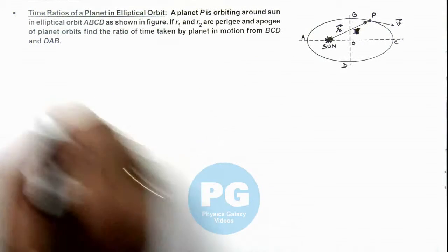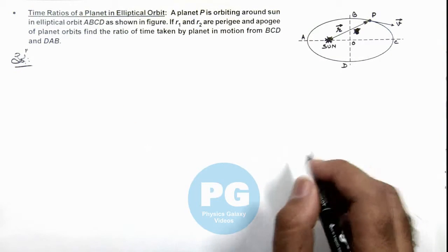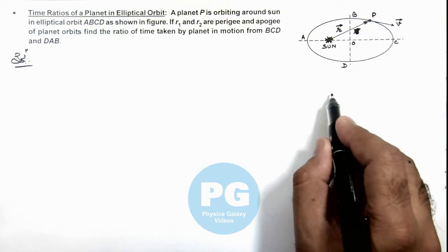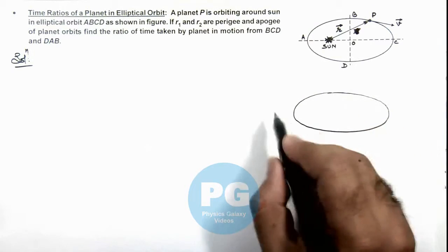Now in this situation, we can analyze it by taking the area of the ellipse on the two sections in which the planet is moving.